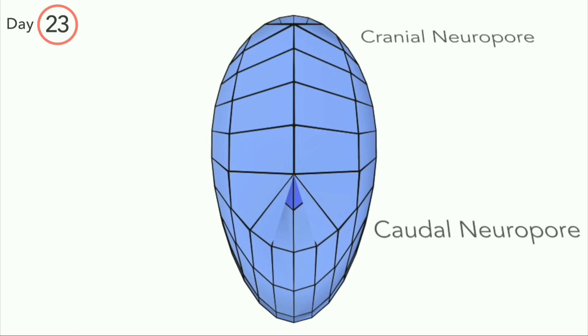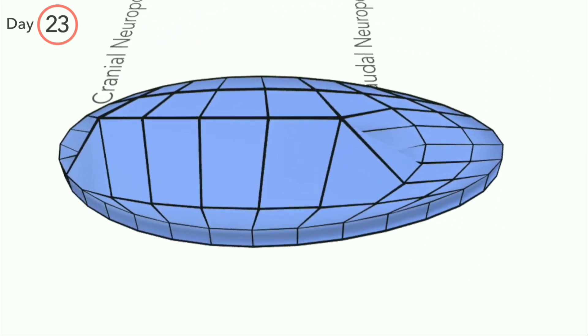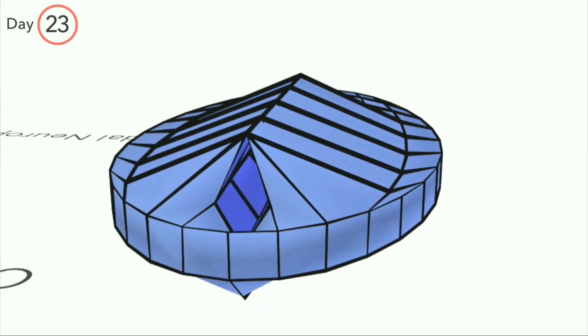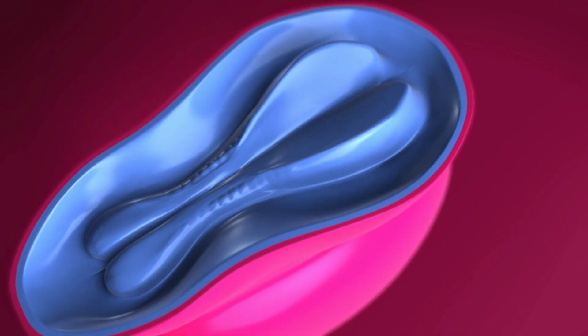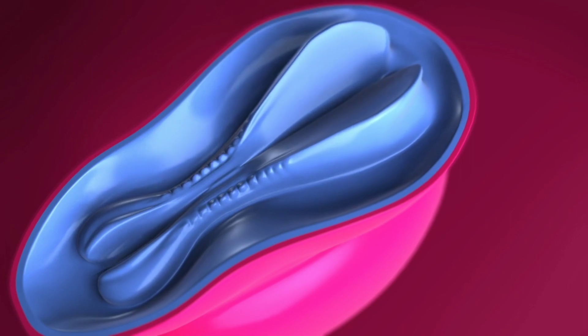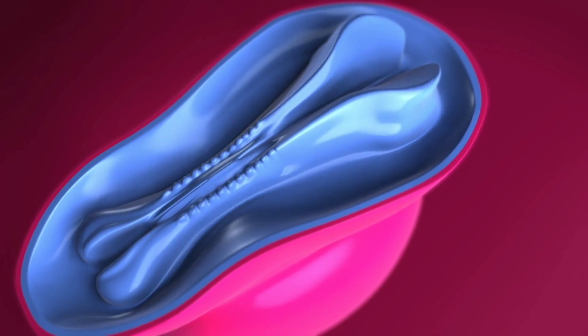Remember, the anterior one is also called the rostral neuropore and it closes by day 24. You can clearly see here that the cranial neuropore is the first one to close, by day 24 or 25.